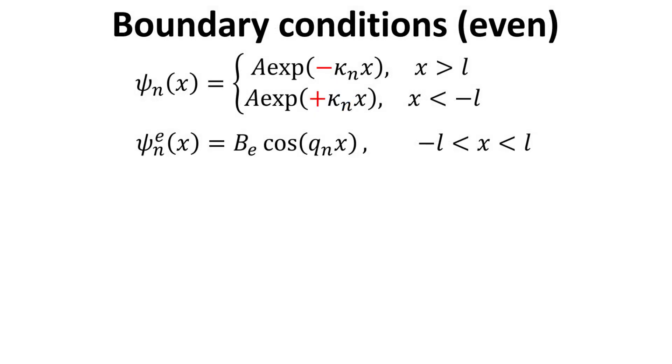We shall solve even and odd solutions separately. Let's begin with the even solution by first collecting our piecewise solutions within and outside the well. The constants A and B can be pinned down by imposing the so-called boundary conditions.